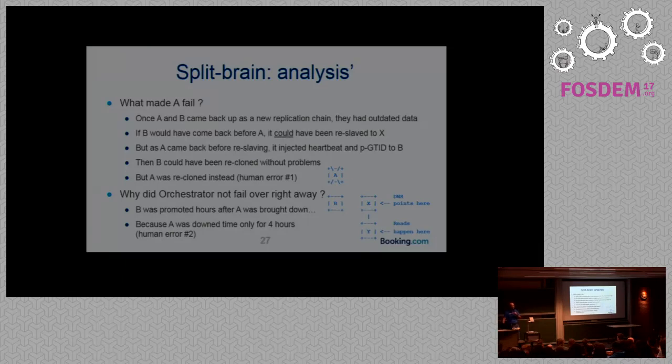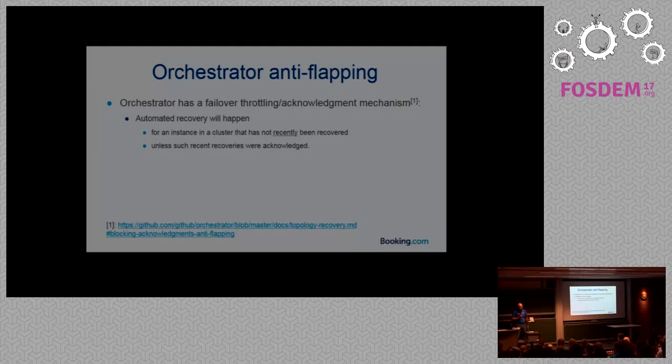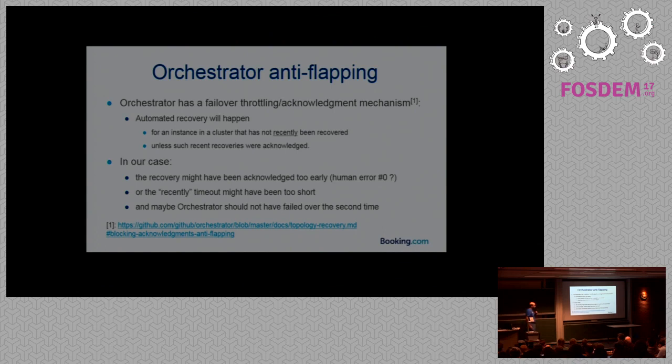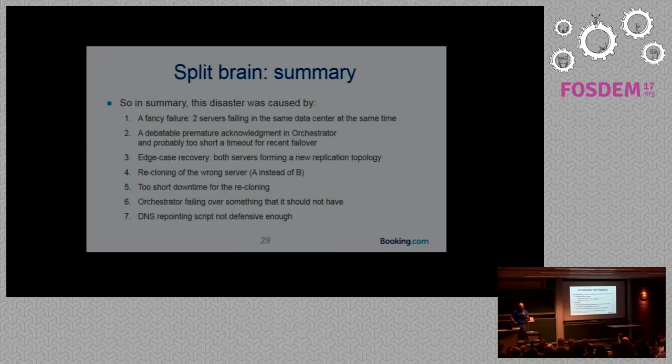B was actually promoted as a new master from A hours later. Orchestrator detected the failure of A hours later. And this is because I only downtimed A for four hours. When I recloned A, I said, okay, I don't want anybody to be paged on that. I downtimed the box for four hours, which was a mistake. I should have downtimed that for a week. And so this is human error number two. And still, orchestrator should have realized that that failover, that DNS repointing shouldn't happen.